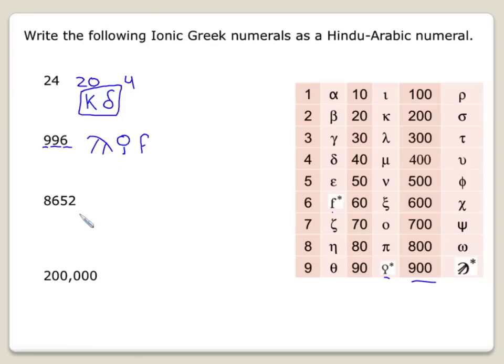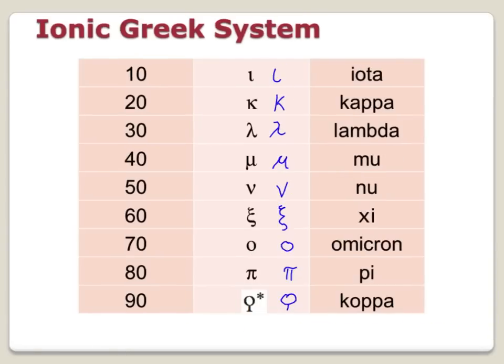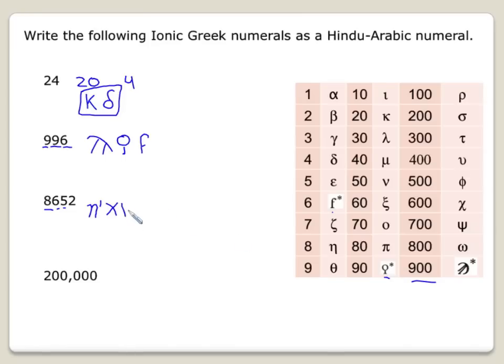Let's write 8,652. So again, for the thousands, we're actually going to write 8 times 1,000. So we want this one, eta times 1,000. And then 600 is right here, it's chi. 50 is right here. Oh, what was that one called? That one was called nu. And then 2 is beta.